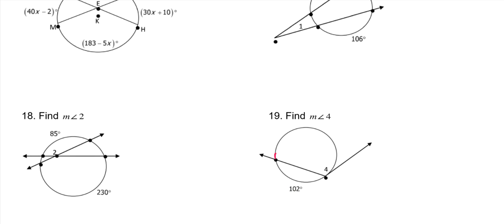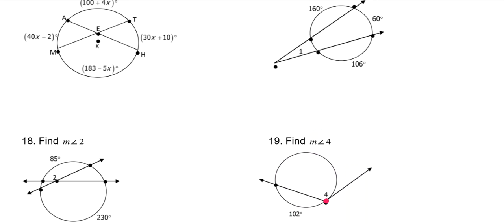So you would need to know this arc, which you can find by doing 360 minus 102, and then divide it by two, and that'll give you the measure for angle four. It's essentially an inscribed angle because its vertex is still on the circle.